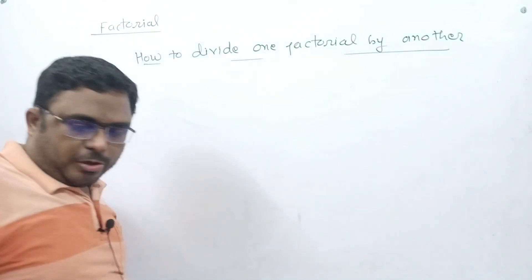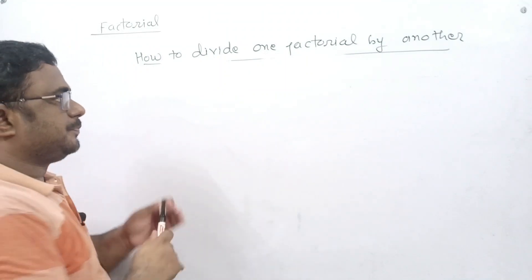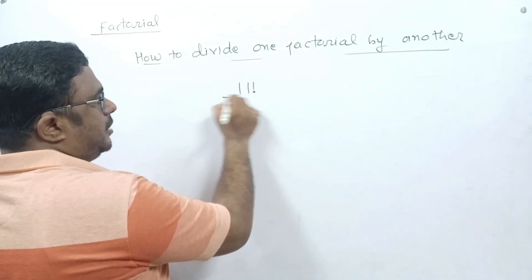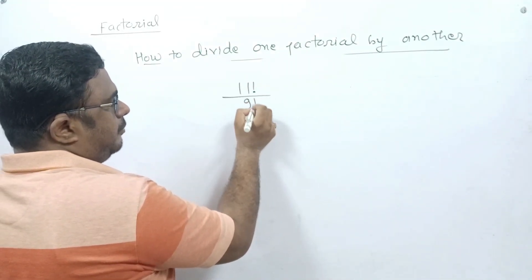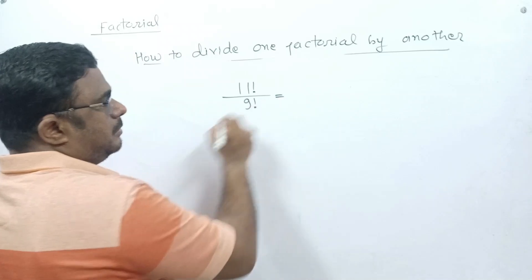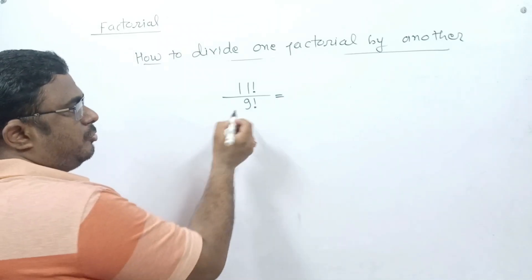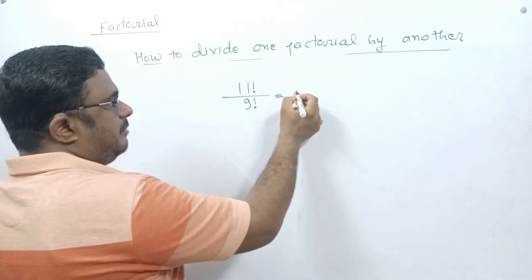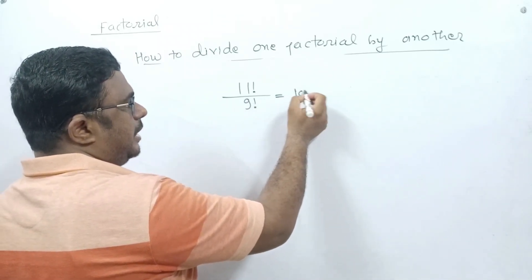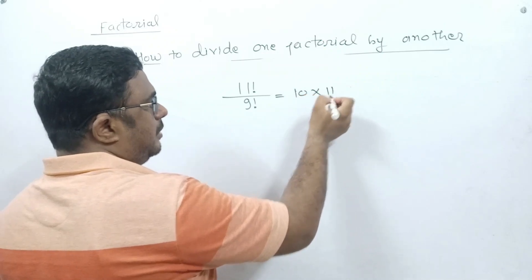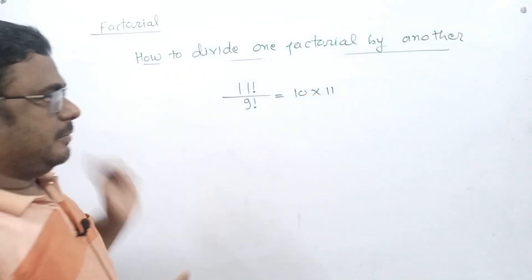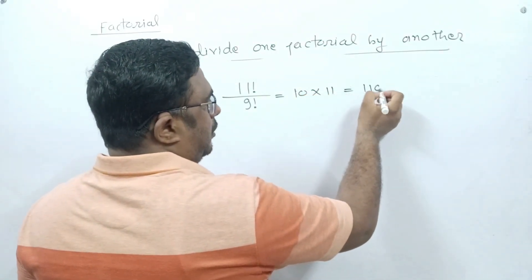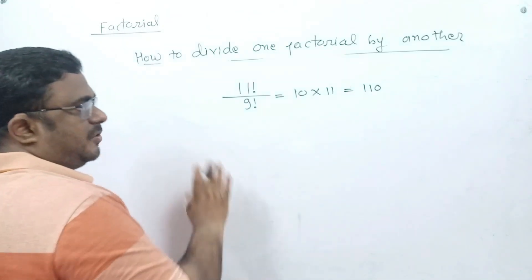Let us take one more example. Suppose it is 11!/9!. You write down the natural numbers just after 9, which are 10 and 11, and stop at 11. Multiplying gives 10 × 11 = 110.